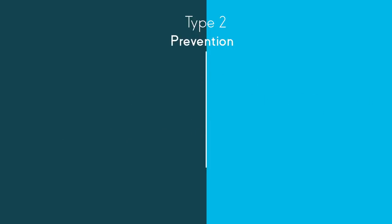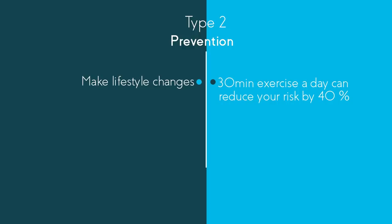Due to the risk factors, you may not be surprised to hear that lifestyle changes can help prevent the development of type 2 diabetes by achieving a healthy body weight. 30 minutes of exercise a day can reduce your risk of developing type 2 diabetes by 40%.